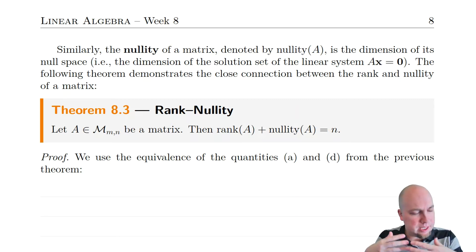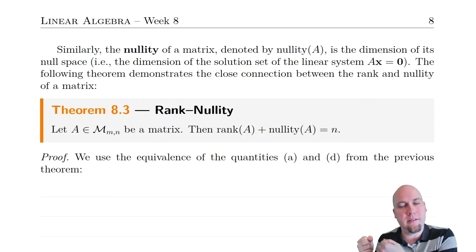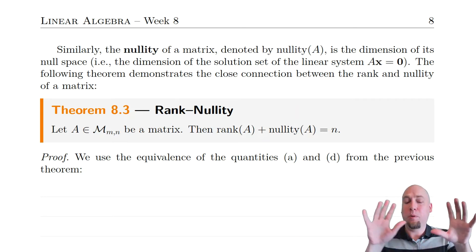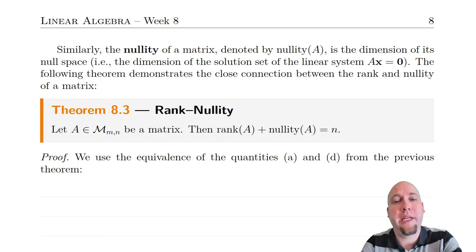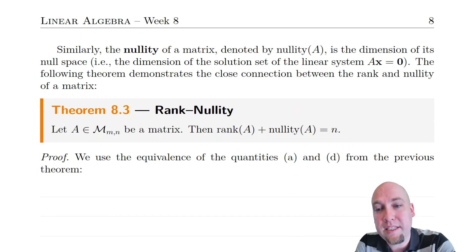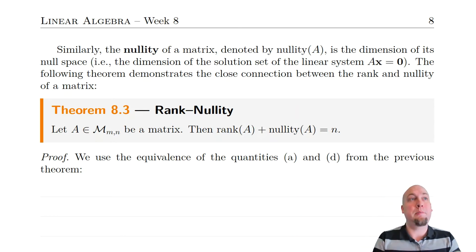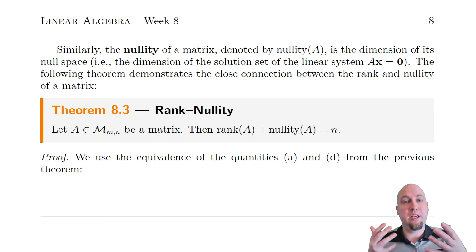So if you know everything you need to know about the rank of a matrix, you can use it to get the nullity. But what is the nullity of a matrix? Well, the nullity of a matrix is the dimension of the null space of that matrix. We showed that the null space of a matrix is a subspace, so it makes sense to talk about its dimension. That dimension we call the nullity of the matrix.